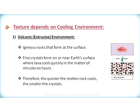Texture depends on the cooling environment, and we generally see two different environments where molten rock can cool. One environment is called a volcanic or extrusive environment. In this environment, igneous rocks form at the surface of the Earth and generally have fine crystals, which form by the cooling of lava. Lava cools quickly — in a matter of minutes, a few hours, or maybe even days. Therefore, the quicker the molten rock cools, the smaller the crystals will be.